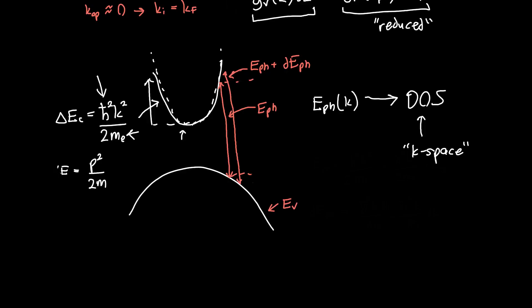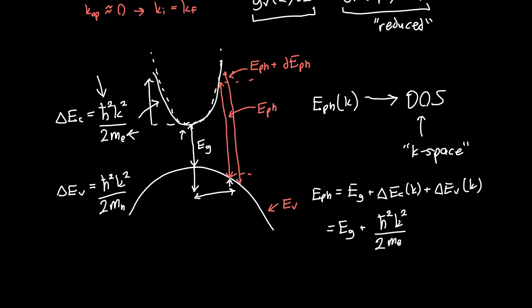And similarly, we can write a similar expression for the energy below the valence band, delta EV, the energy below the valence band in terms of the momentum. That's just h-bar squared k-squared over 2 times the hole mass mh. So if we know the momentum at which our transition is happening, then we can figure out the total photon energy. The total photon energy is just going to be this band gap, EG plus delta EC, the energy above the conduction band as a function of momentum, plus delta EV as a function of momentum. And just expanding that out in terms of the momentum, we've got h-bar squared k-squared over 2 times the electron mass and h-bar squared k-squared over 2 times the hole mass.